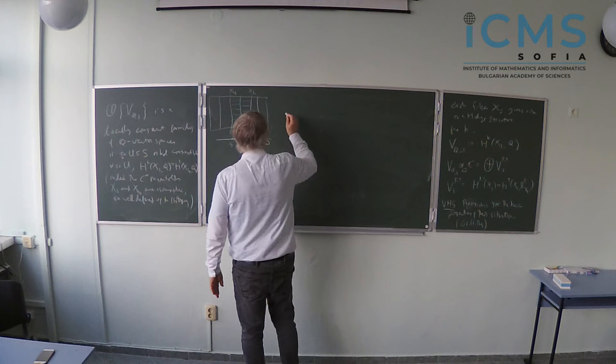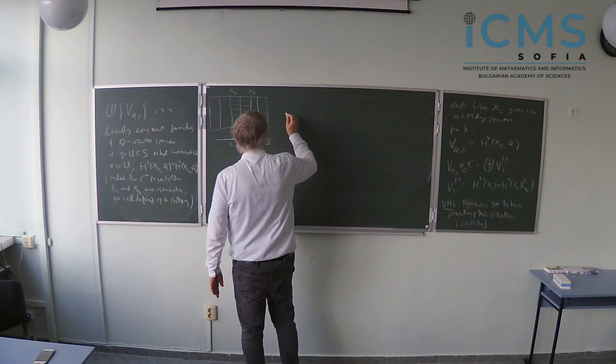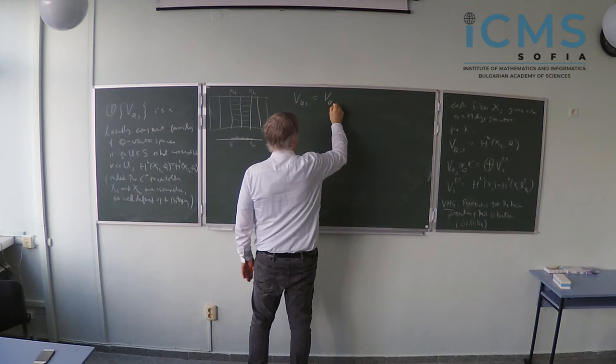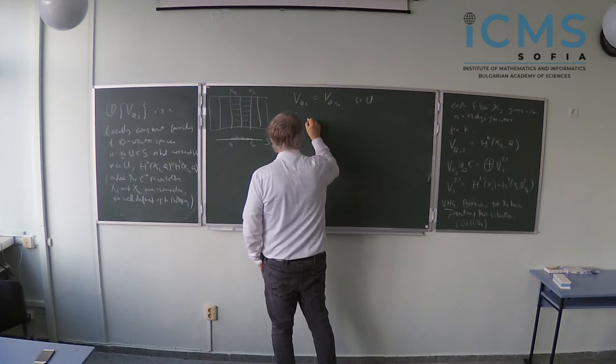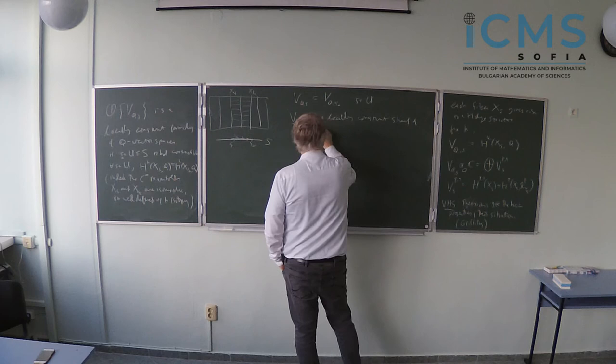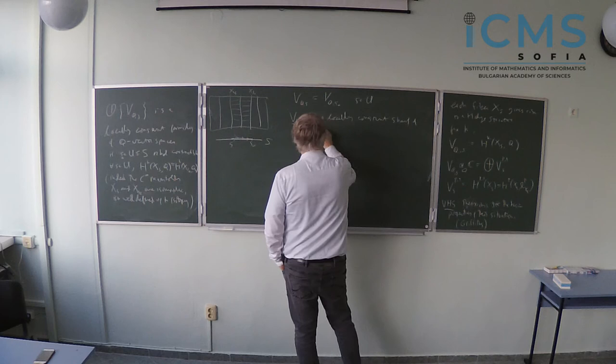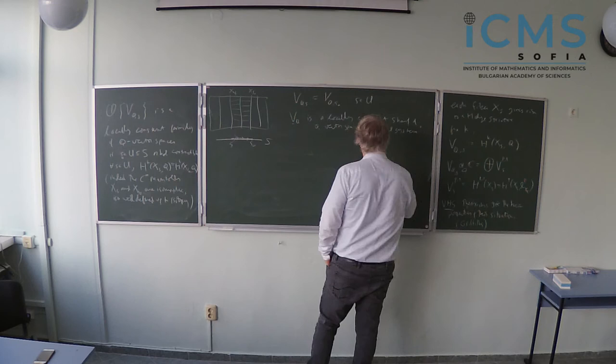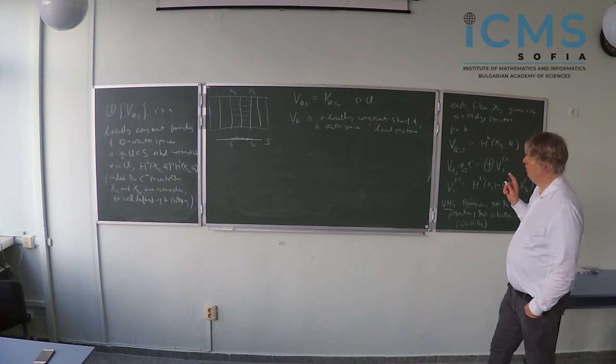So in terms of our notation V_S, this means that V_Q(S) is isomorphic to V_Q(S_0). In a little bit fancier terms, this says that V_Q is a locally constant sheaf of Q-vector spaces. We'll call that a local system.